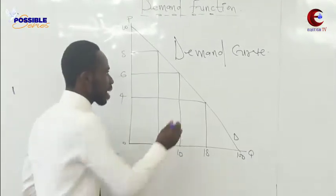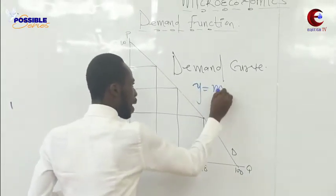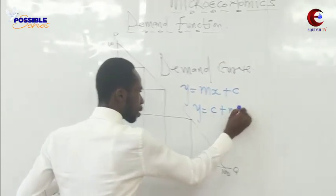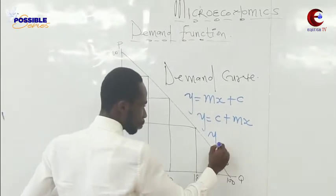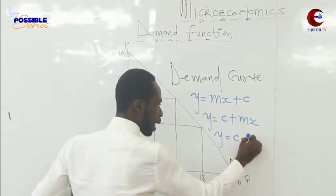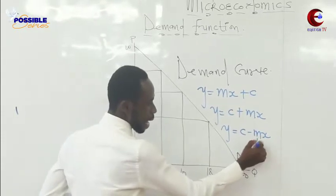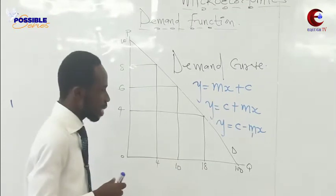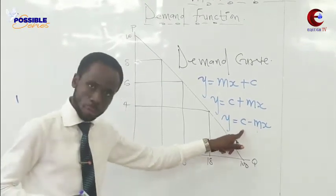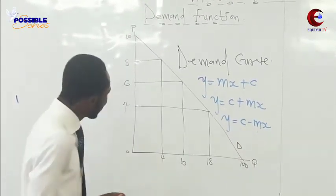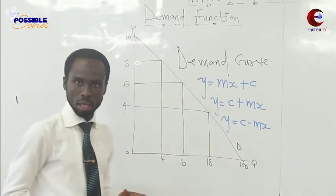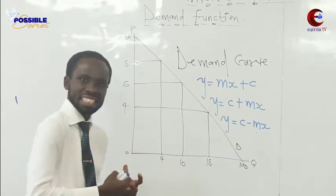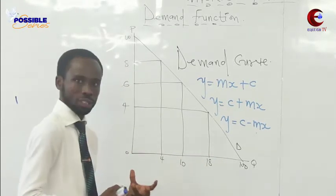From our previous lecture we know the demand curve is linear — it is a line in nature. The equation of a line is y = mx + c, which is the same as c + mx or c − mx. Here m is the gradient and c is the y-intercept. The law of demand also follows this formula because the demand curve is linear in nature.